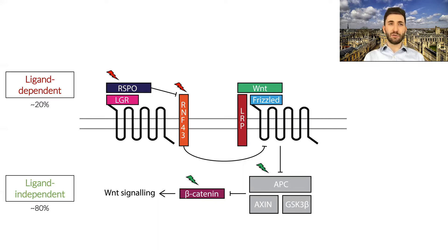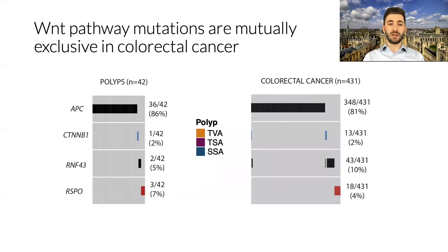In contrast, gain-of-function mutations in R-spondin and loss-of-function mutations in RnF43 depend upon Wnt binding to frizzled receptors, and we call these mutations ligand dependent. As support for this hypothesis, we showed both in the internal and publicly available cohorts of colorectal tumours that Wnt mutations are mutually exclusive, with few occurrences of multiple Wnt mutations in the same tumour.